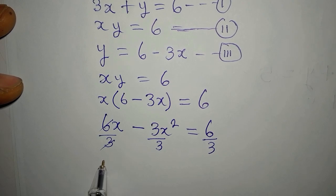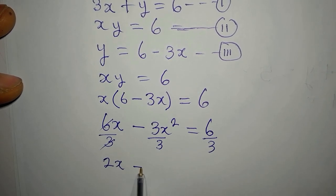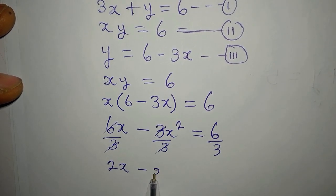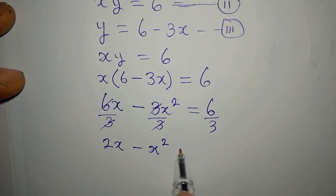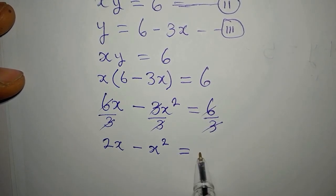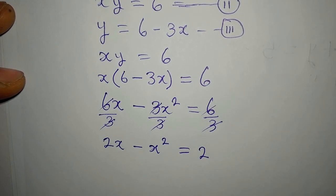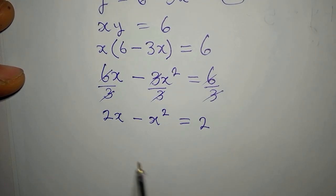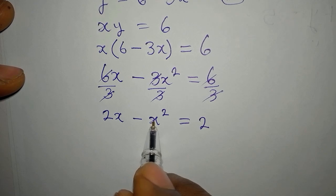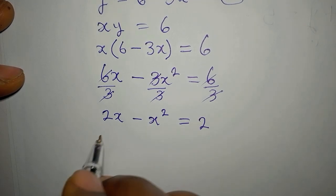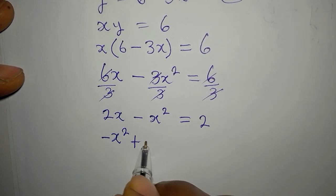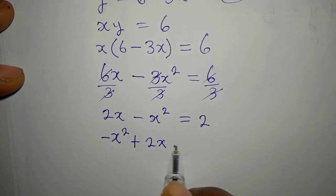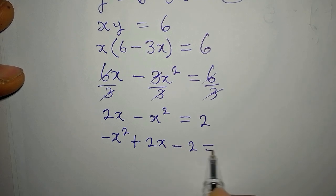3 goes into 6x twice, giving 2x; 3 goes into 3x squared giving x squared; and 3 goes into 6 giving 2. Let's rearrange so the highest power comes first: negative x squared plus 2x minus 2 equals 0.